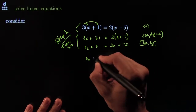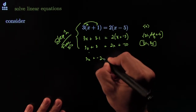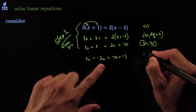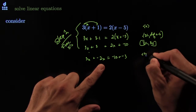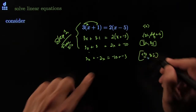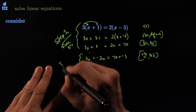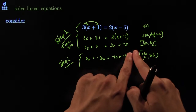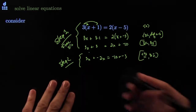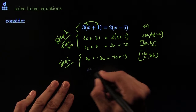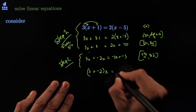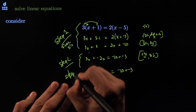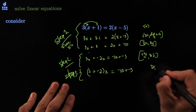Now I go: 3X — this moves to the other side, it becomes negative 2X. And that moves to the other side, it becomes negative 3. This is the cancellation law of addition. This is step two: move all the X's to one side and all the non-X items to the other side. Now step three: gather your X's. Three plus negative two, times X, is equal to negative ten plus negative three. This is step three.